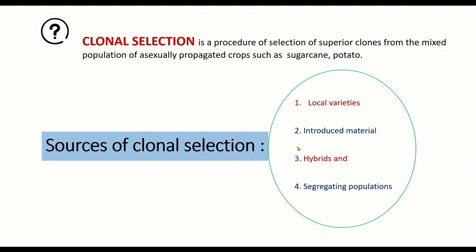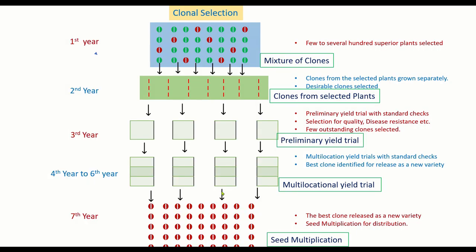In hybrid varieties there is no need for seeds, because if we self F1 we get segregating F2 generations. Instead, growing cuttings of hybrid varieties gives similar clones so we can apply clone selection to hybrids. Several hybrids should be taken rather than just one. The segregating population — F2, F3, F4 generations from a cross of two diverse parents — can also be a source for clonal selection.